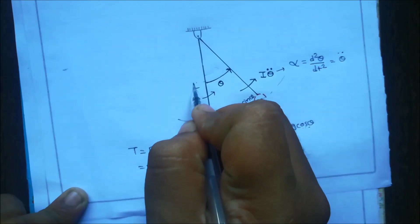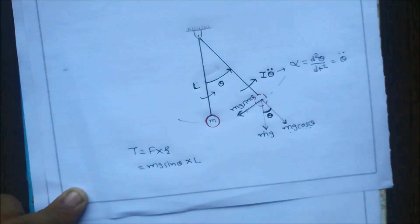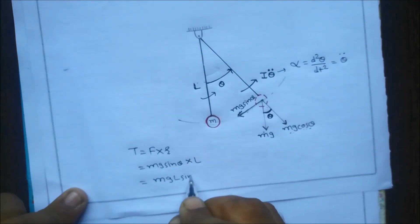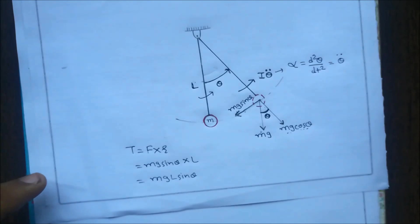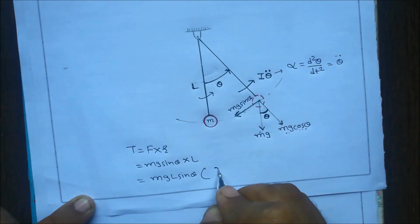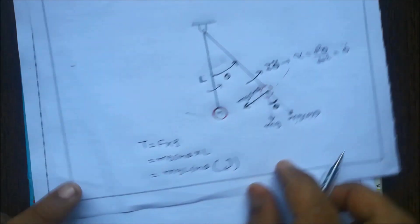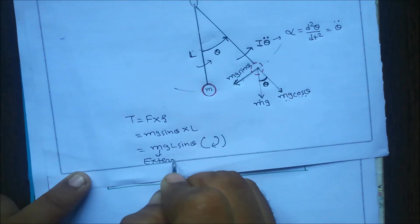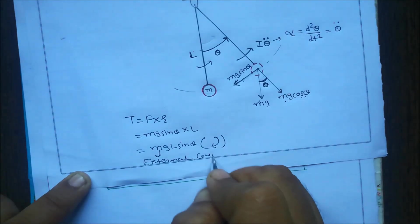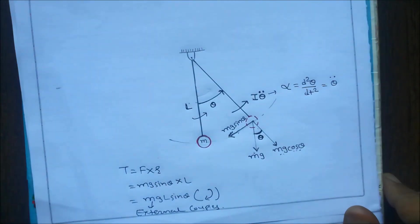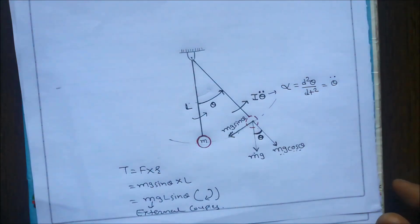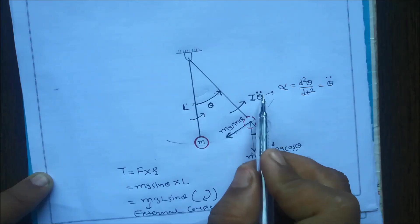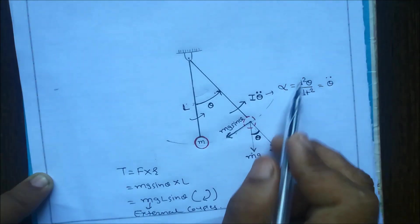The restoring torque is force multiplied by radius. The force is mg·sinθ and the radius is the length of the pendulum l, so the restoring couple is mg·l·sinθ acting in the clockwise direction. This is the external or restoring couple. The accelerating couple is I·θ̈, and θ̈ is the angular acceleration — the double derivative of displacement.